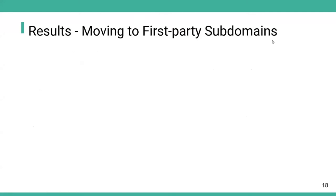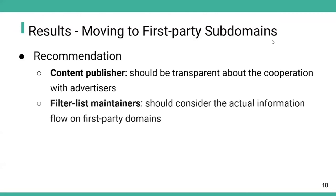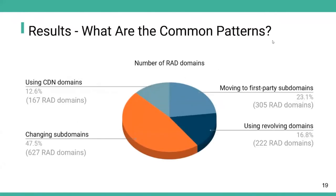We provide some recommendations for content publishers and filter list maintainers. For content publishers, we suggest they should be transparent about cooperation with advertisers and should not blur the trust boundary between first-party and third-party advertisers, as it could potentially harm users' privacy. For filter list maintainers, we recommend the policy should not be lenient to first-party trackers, and should consider the actual information flow on first-party domains.